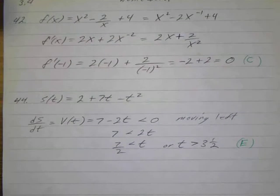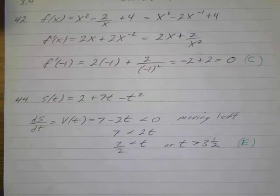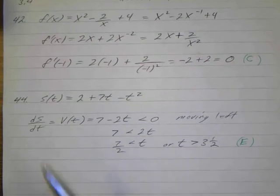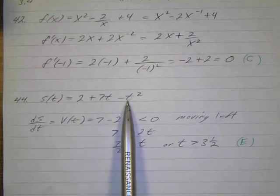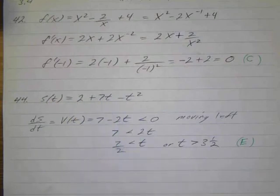And then number 44, at which of the following, and this is particles referring to this position function: 2 plus 7t minus t squared.